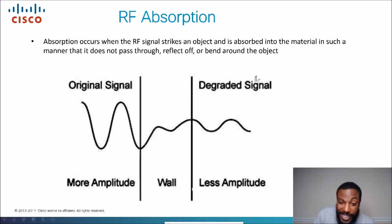The signal is going to get degraded, and you'll have less amplitude. So that's exactly what happens with RF absorption. The signal is strong until there's an object in the way, whether it's lead or some kind of wall, you'll have less amplitude, and then you'll have a weaker signal.